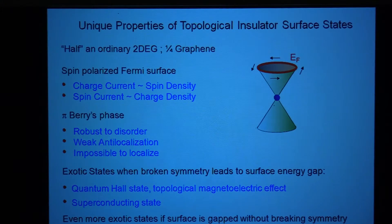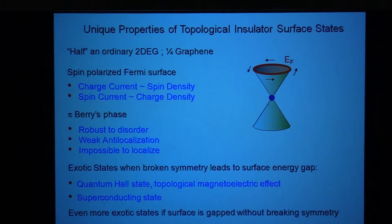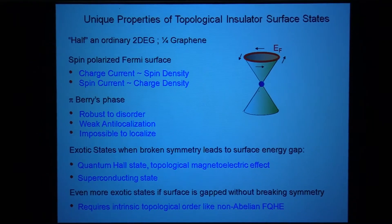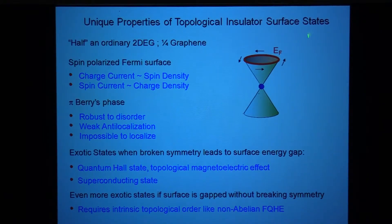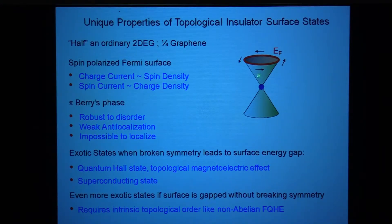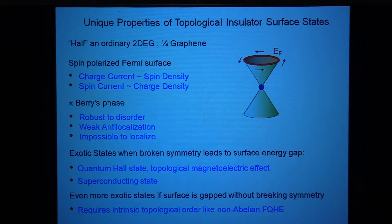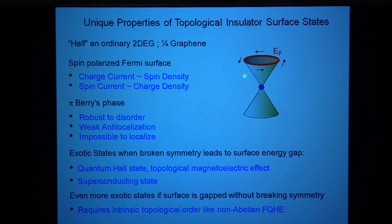Let me start with the surface of a topological insulator. We talked about this yesterday, and Zahid and Vidya also discussed it. I want to emphasize that the surface of a topological insulator, which has a single Dirac cone — an odd number — is a very special thing. With time reversal symmetry, it can only exist on the surface of a three-dimensional system. There's a correlation between spin and charge: the direction electrons move is correlated with their spin, so a charge current is equivalent to a spin density, and a spin current is equivalent to a charge density in these helical surface states.